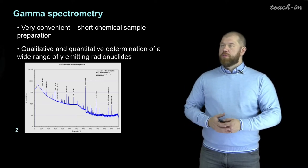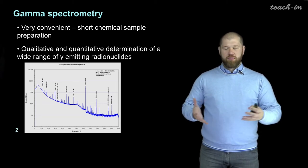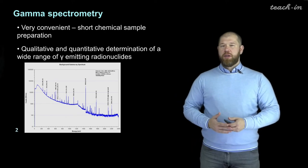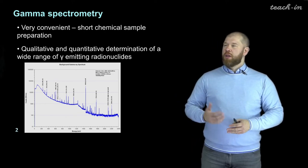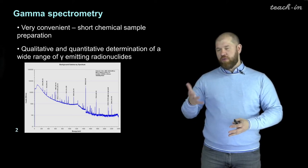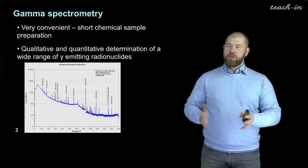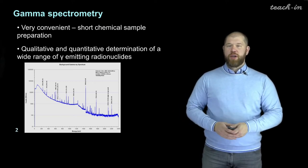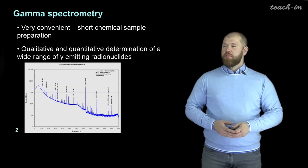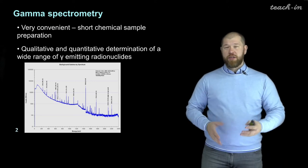Also, we can measure quite a wide variety or wide range of gamma-emitting radionuclides because usually we can measure gamma quanta with energies starting from a few kiloelectron volts to a few megaelectron volts. So it's quite a broad range of energies. Thus we can measure a lot of gamma-emitting radionuclides simultaneously in one measurement.